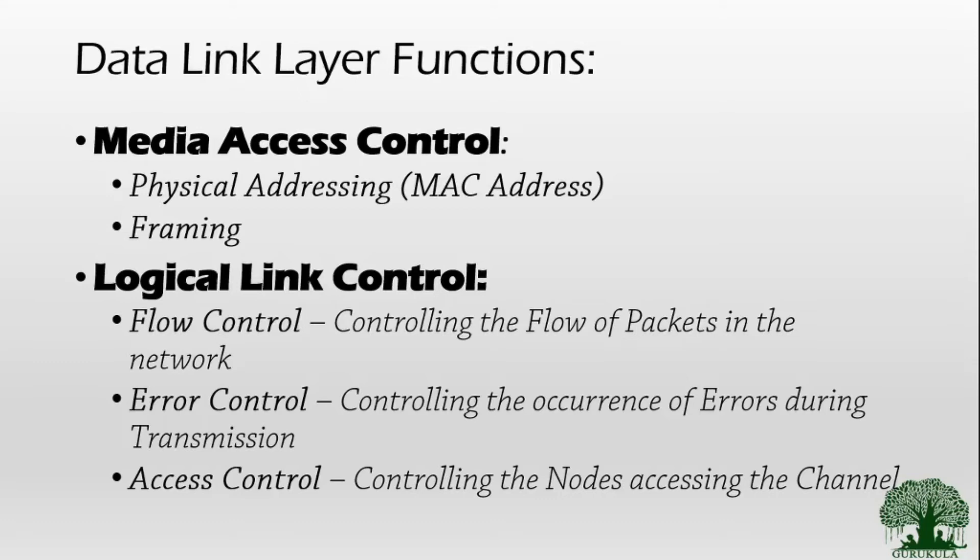Framing is the process of adding redundant information to data so as to send it over the network. Flow control is a controlling mechanism for the flow of packets on the network — you can relate it to controlling traffic on roads using signal lights. Error control is a mechanism deployed on the network to reduce the occurrence of errors; we can either detect or correct errors. Access control involves controlling which node accesses the channel and when, by creating certain protocols for channel access.